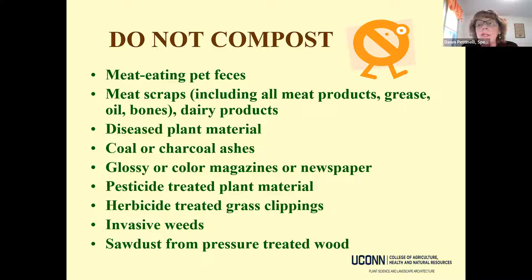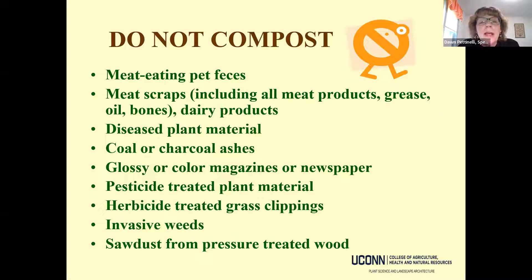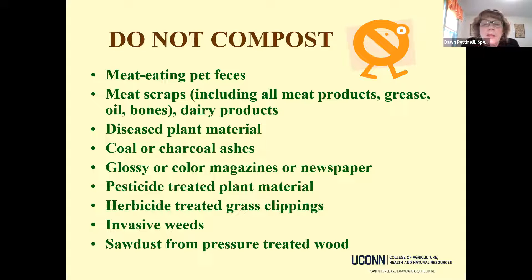Avoid putting plant material treated with pesticides or herbicides — they may not degrade. Don't add invasive weeds like garlic mustard or crack grass unless you've removed seeds and roots and dried the material in the sun. Avoid pressure-treated wood, whether the old copper-chromium-arsenate type or newer copper and quaternary ammonia formulations.